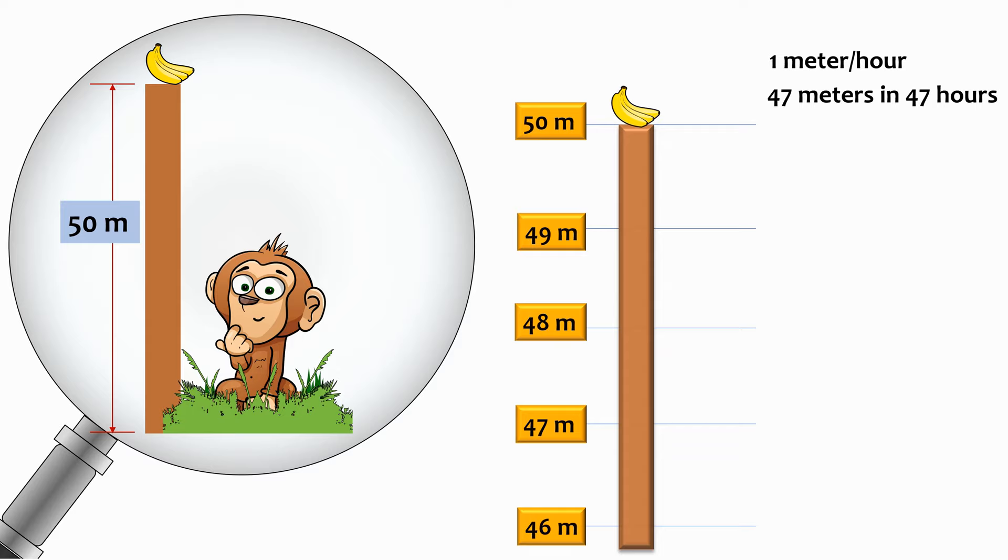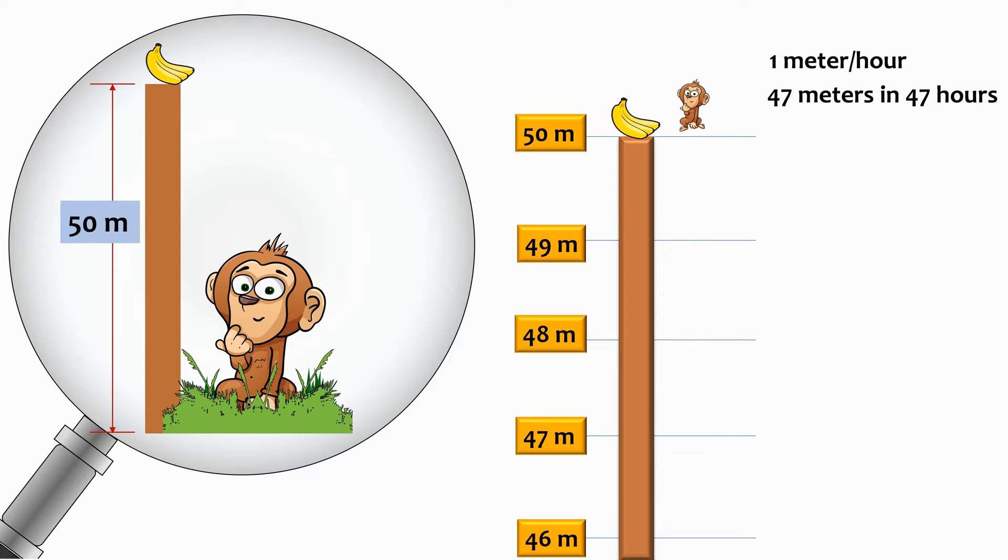Then in the 48th hour, he will climb 48, 49, and 50 meters, like so, and he'll immediately grab the bananas on the top before he slips down. So it takes him only 48 hours to get the bananas. It is not required of him to properly settle at the top of the pole to have those bananas. Therefore, the correct answer is 48 hours.